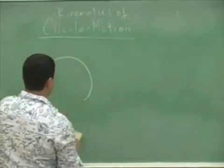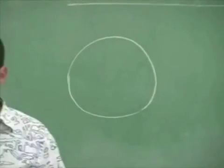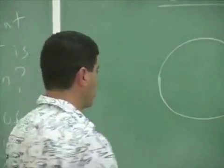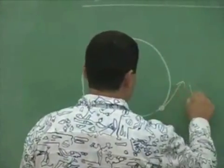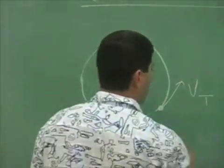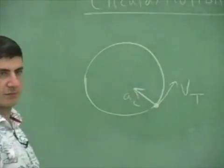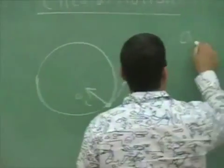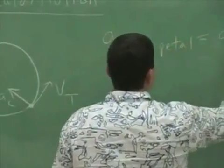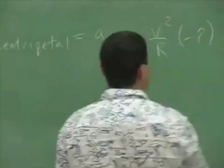We already addressed this in the previous problem. When an object is going in a circle, even if it is not changing its speed, it's still accelerating because it's changing its direction. When something is going in a circle it has a tangential velocity and an acceleration called centripetal acceleration: a_c = v² / r times negative r-hat.